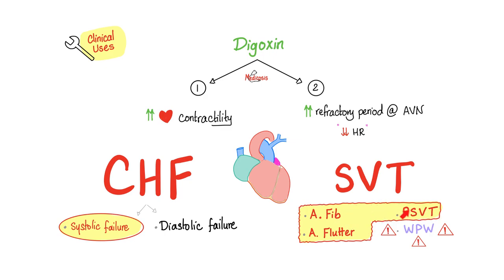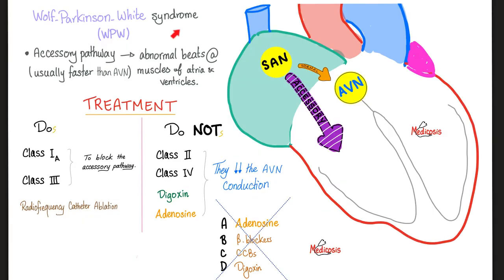We can use digoxin in atrial fibrillation, atrial flutter, and PSVT. However, never use digoxin in Wolff-Parkinson-White syndrome, which is an AVRT. In WPW, you have an accessory pathway which is not normal. Normally the impulse starts at the SA node, goes to the AV node, and then to both ventricles. But in WPW, we bypass the normal path and the impulse goes from the SA node straight to the ventricles.